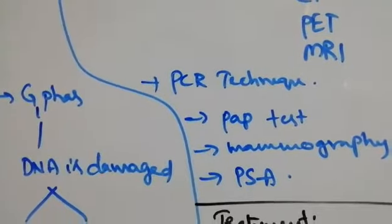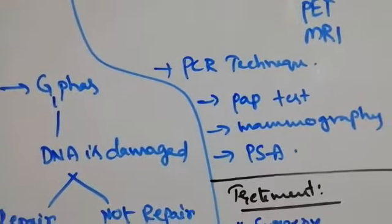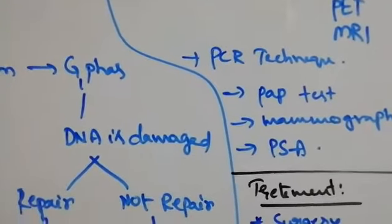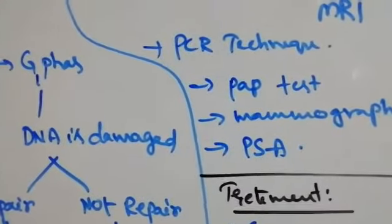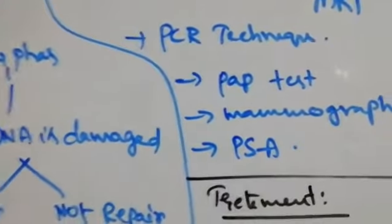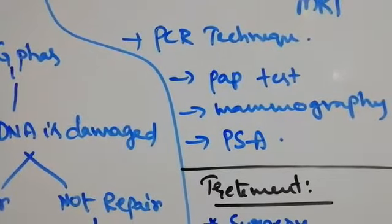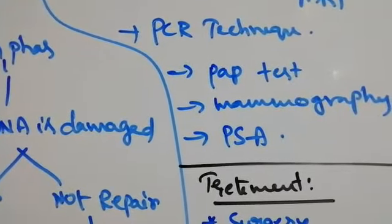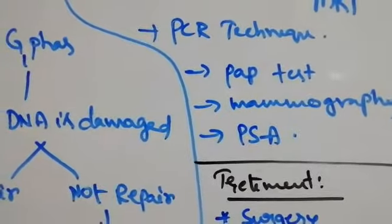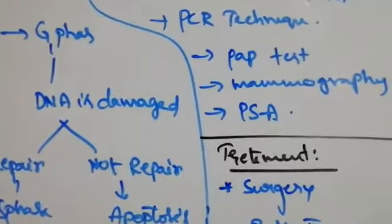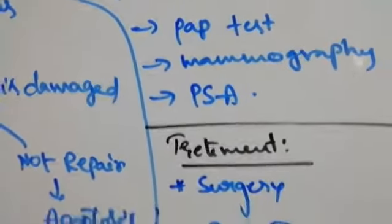PCR technique is helpful for identifying the change in DNA. If DNA is mutated, that leads to cancer. PAP test is mainly conducted for uterus and vaginal cancers. Mammography for breast cancer identification using radiology, and prostate-specific antigen is helpful for identifying prostate cancer in males.